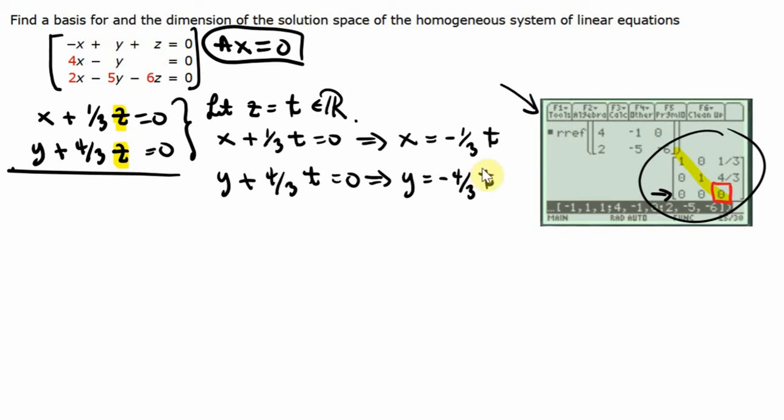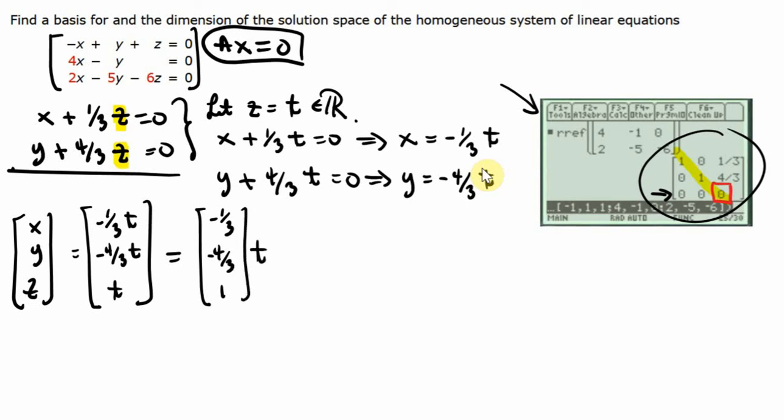Now let's write the solution set. We have X, Y, and Z. X is negative one-third T, Y is negative four-thirds T, and Z equals T. Simplifying, this is negative one-third, negative four-thirds, and one times T.